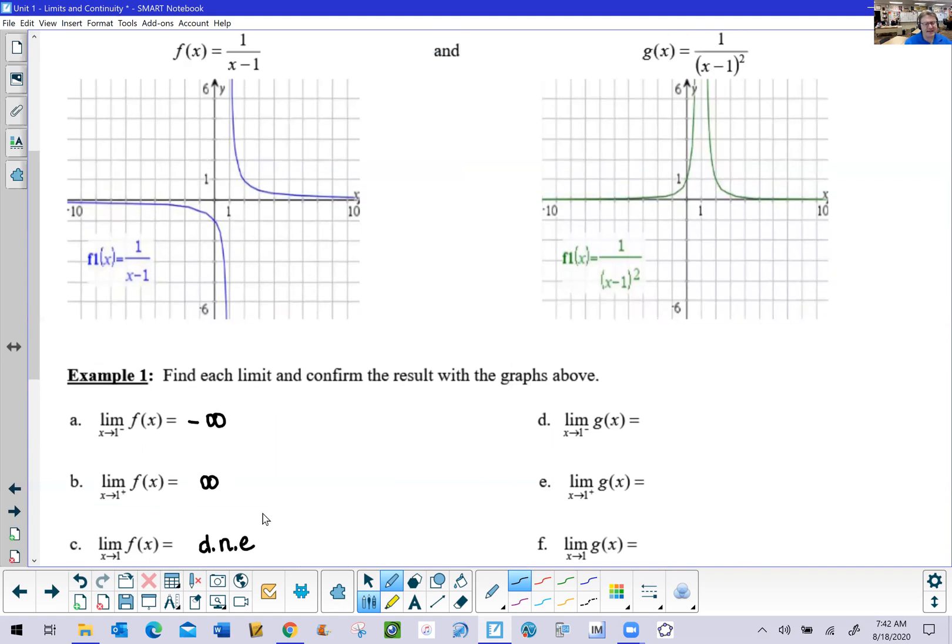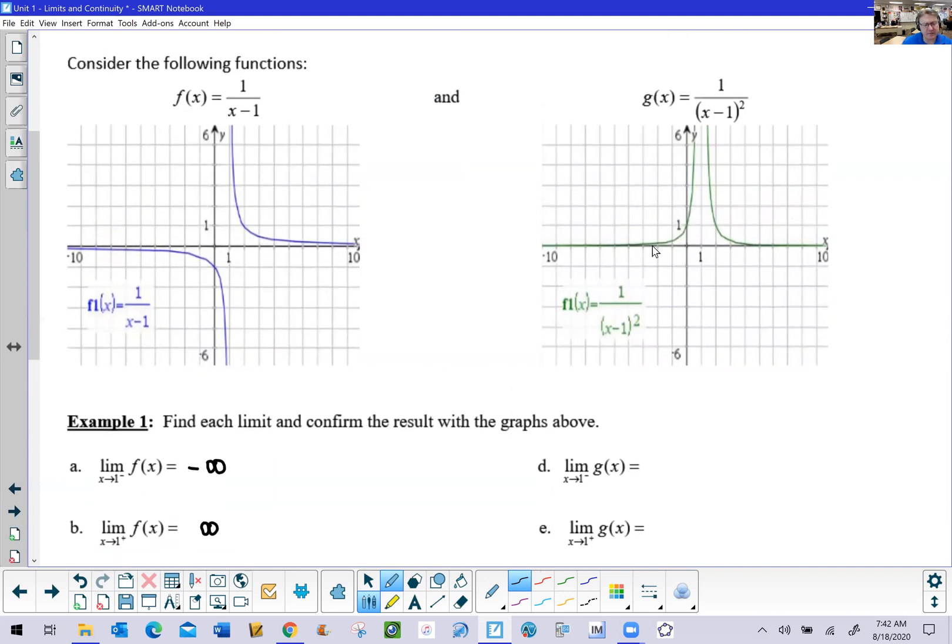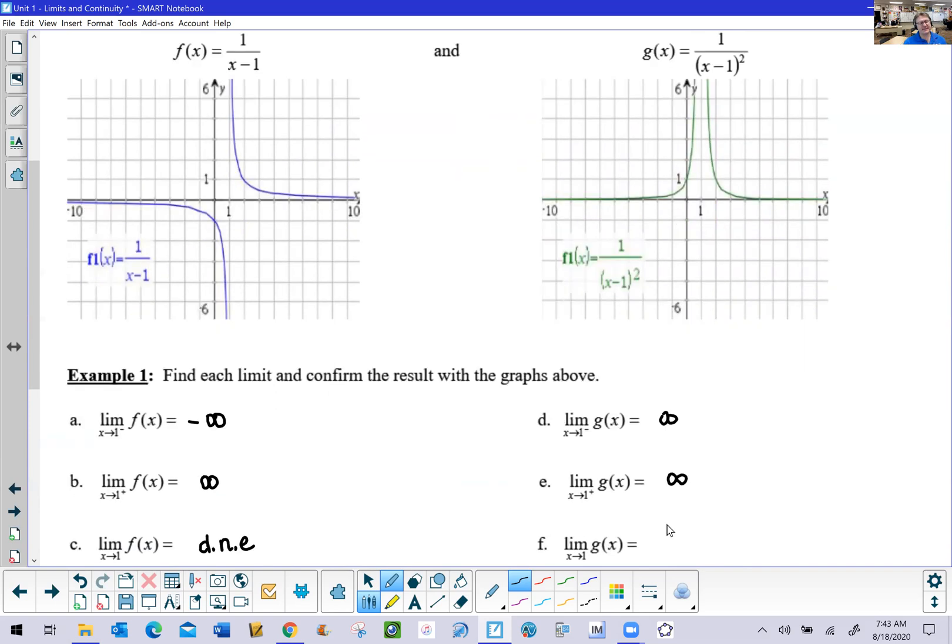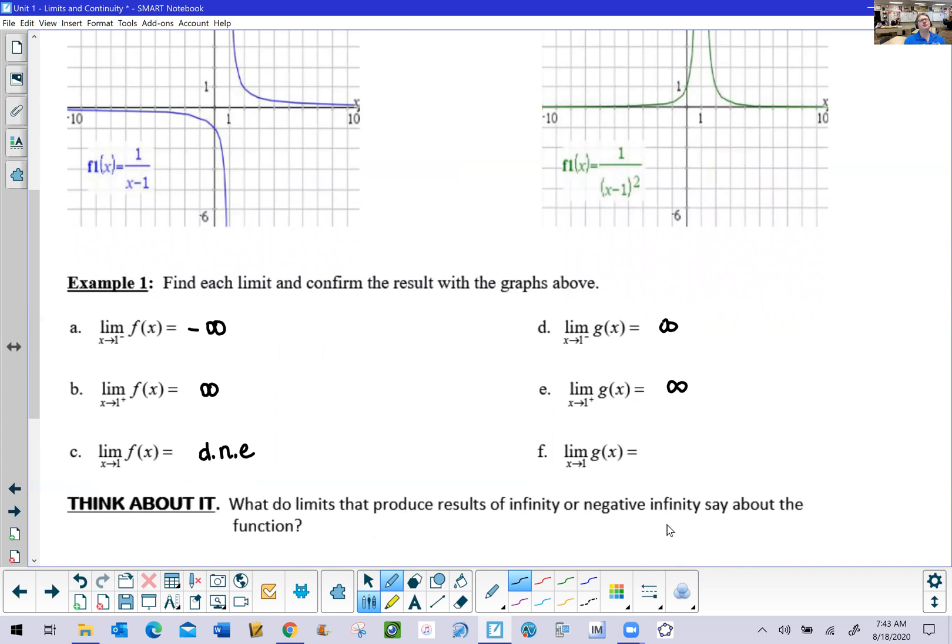When you look at part d, as x approaches one from the left, we can see that now we're going way up high, so we're going to get a positive infinity. And the same thing is going to happen as x approaches one from the right, way up high is positive infinity. Now in this situation, because the two one-sided limits do match, you could conceivably say that your answer here is positive infinity.